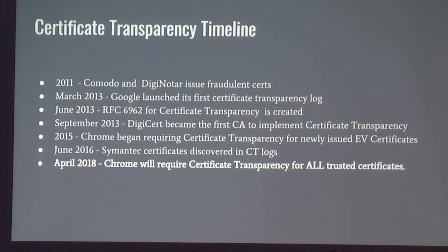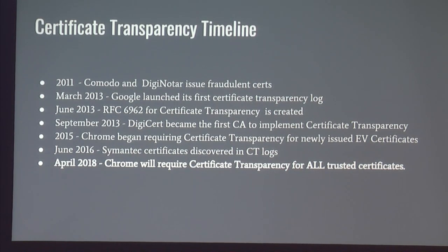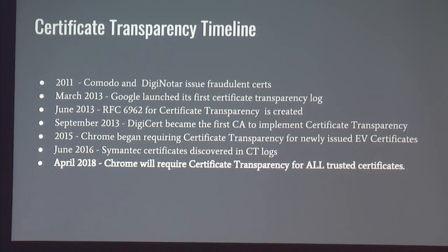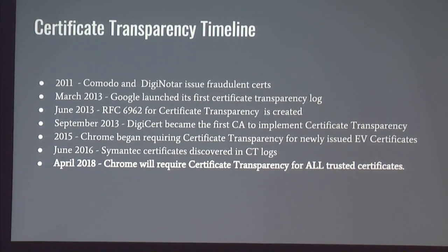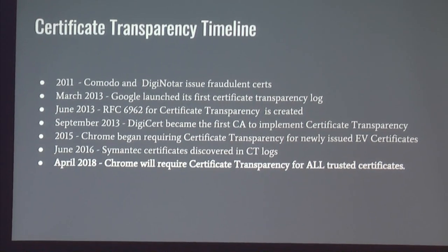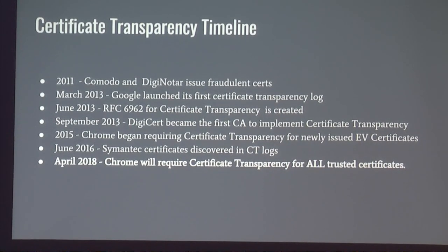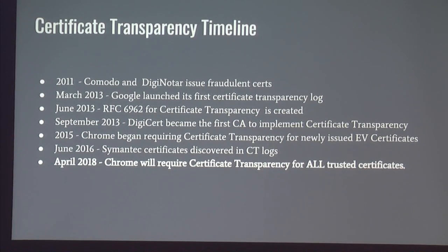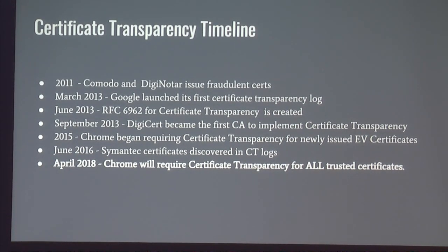Looking at the timeline: we had initial breaches in 2011 and then a few in 2013. In 2013, Google started the RFC to create certificate transparency to solve this problem. In September 2013, DigiCert was the first CA to start implementing this and logging all certificates publicly. In 2015, Chrome required that all EV certificates are in certificate transparency logs — meaning a CA needs to show that the certificate is publicly auditable for EV certs. Then in 2016 we had the Symantec issue as mentioned. And in April 2018, Chrome will require certificate transparency for all certificates, not just EV.